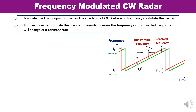As already mentioned, FMCW is a widely used technique to broaden the spectrum of continuous wave radar using frequency modulation. The transit time is proportional to the difference in frequency between the echo signal and the transmitted signal. The greater the transmitter frequency deviation in a given time interval, the more accurate the measurement of transit time and the greater the transmitted spectrum. If we can measure the frequency of the return signal, then the time delay between transmission and reception can be measured, and therefore the range can be determined.